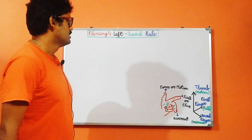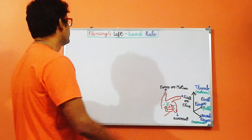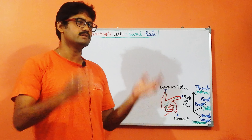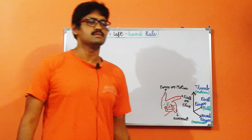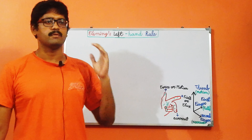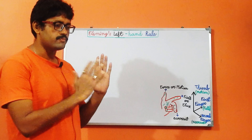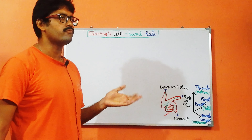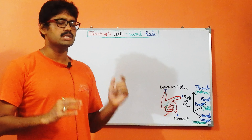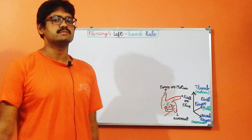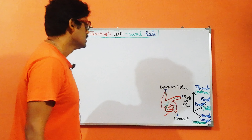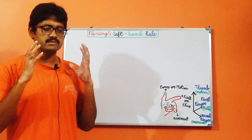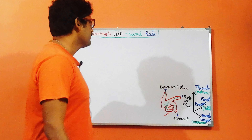Hi, we are Engineering Brothers and we have got our brand new class which is Fleming's Left Hand Rule. This rule is very essential, but before I go into that I want to refresh our previous classes. In our previous classes I completed what is the exact force on a conductor if the conductor is placed in a uniform magnetic field with some certain amount of current. Please do follow those classes if you want to understand the basic concepts.